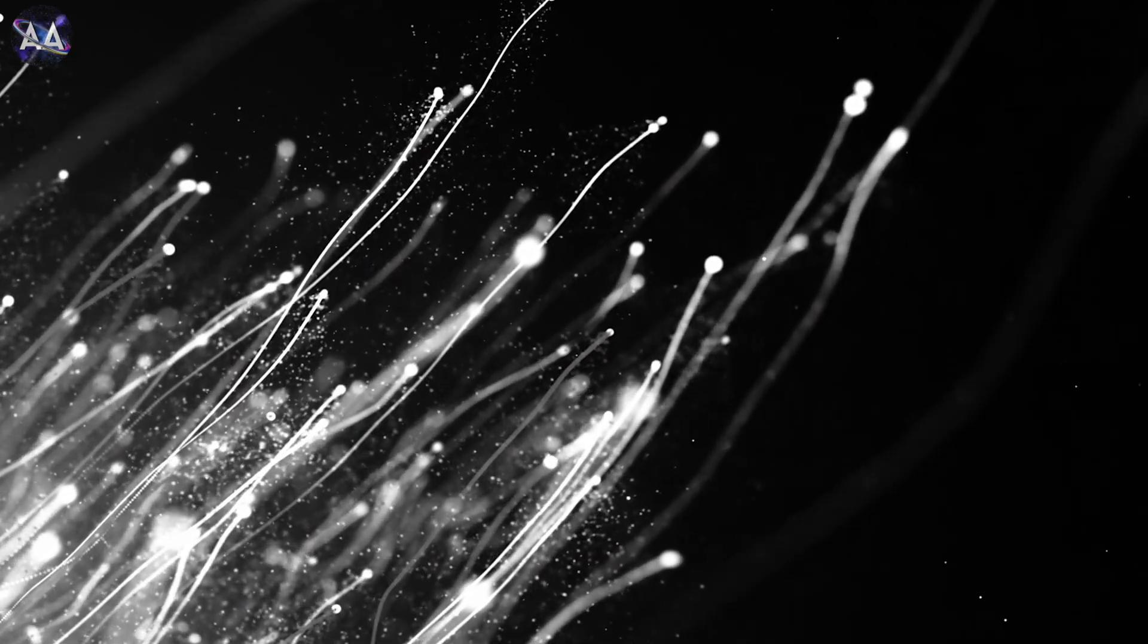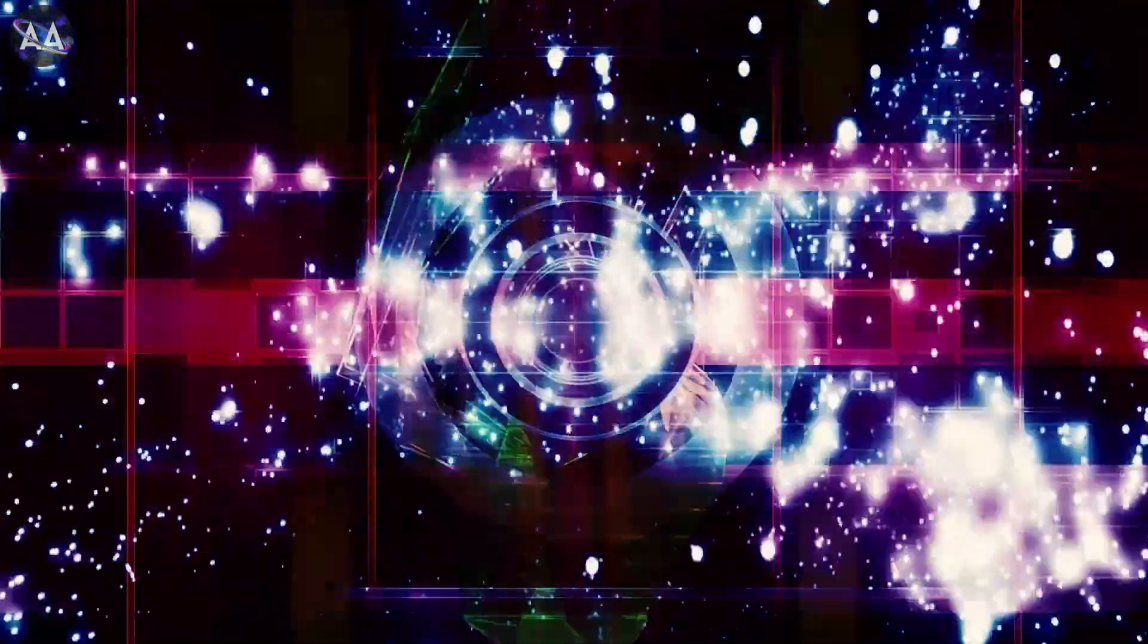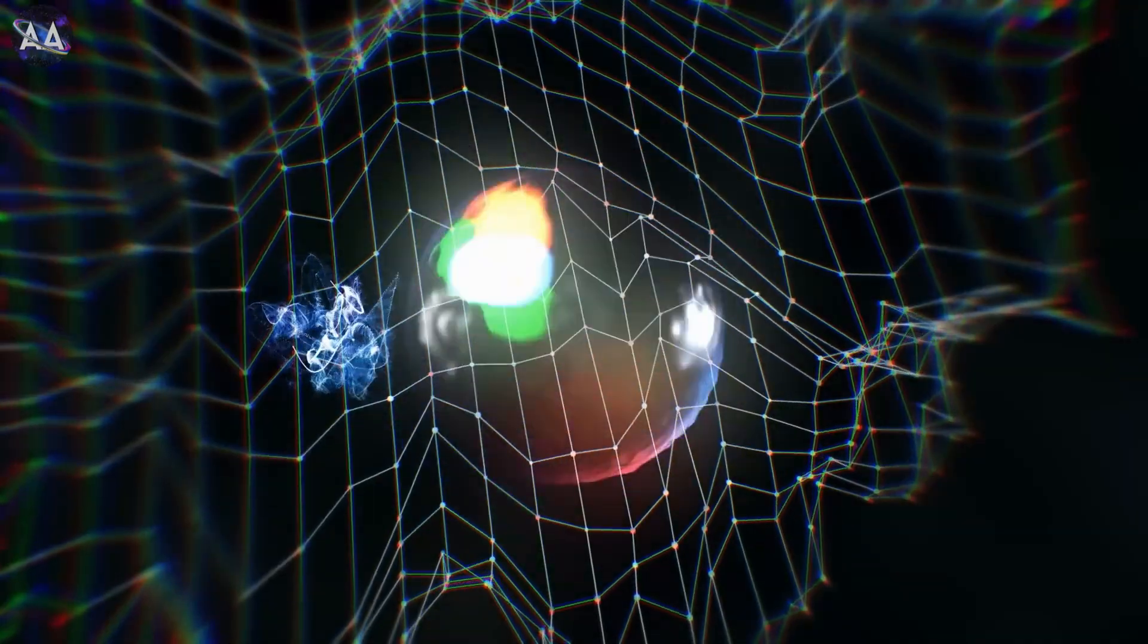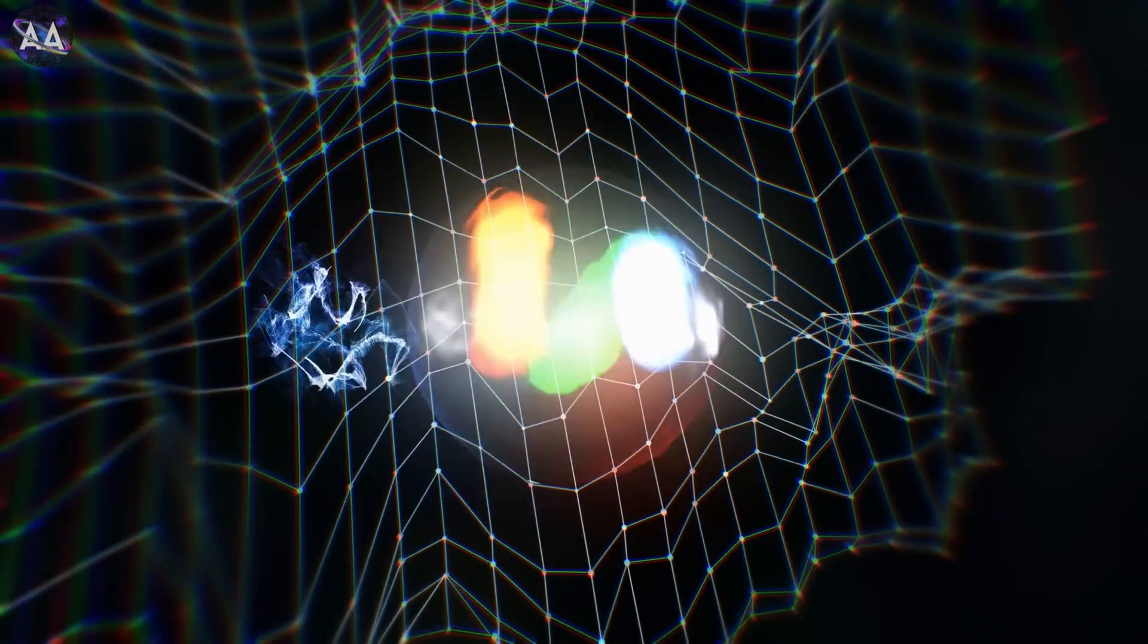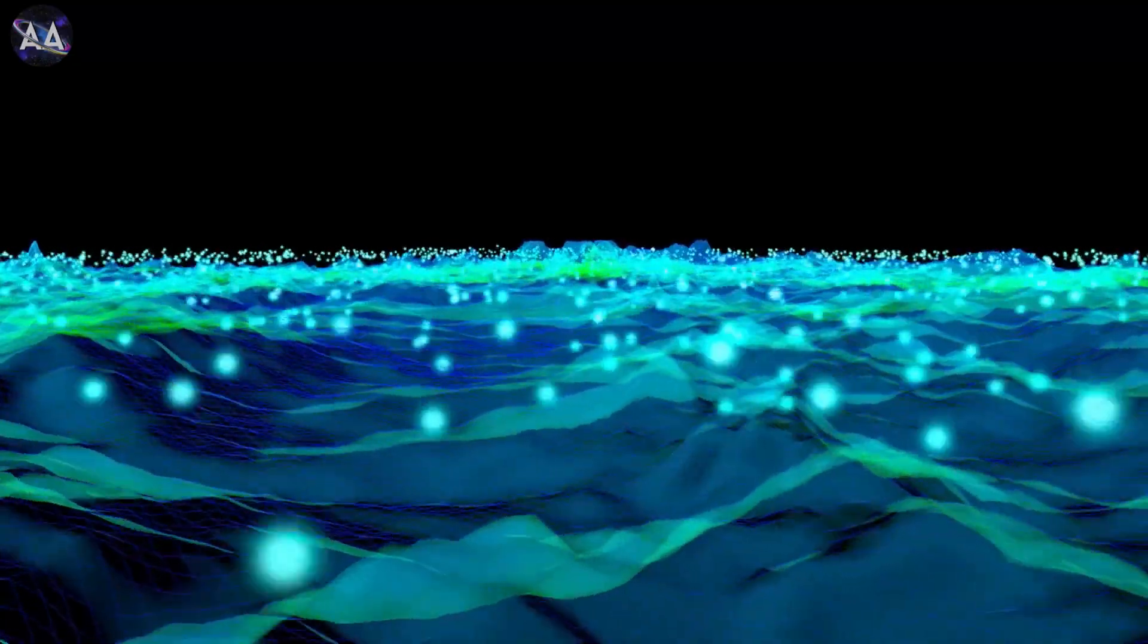That's where string theory comes in. It's an attempt to bring together general relativity and quantum mechanics into one unified theory. A theory of everything. By explaining particles as tiny vibrating strings, it helps to solve some of the inconsistencies between these two great theories.